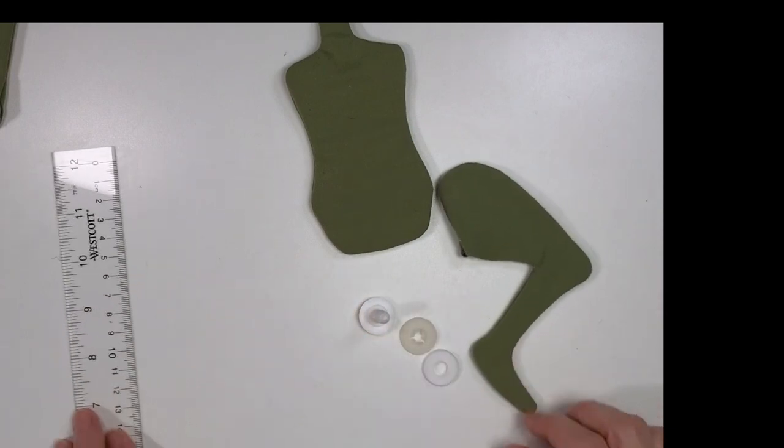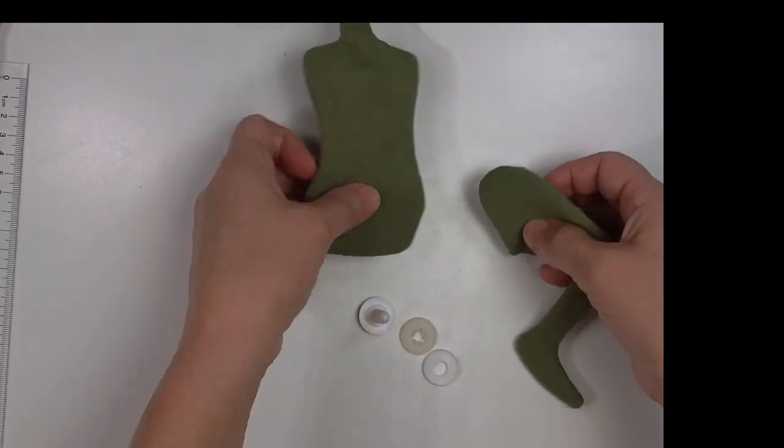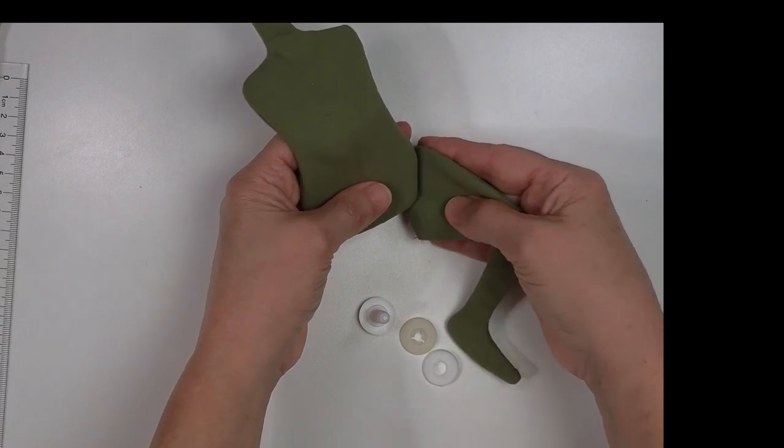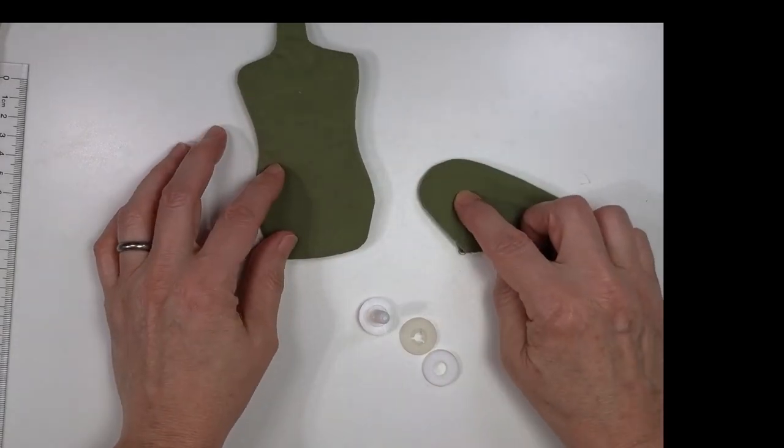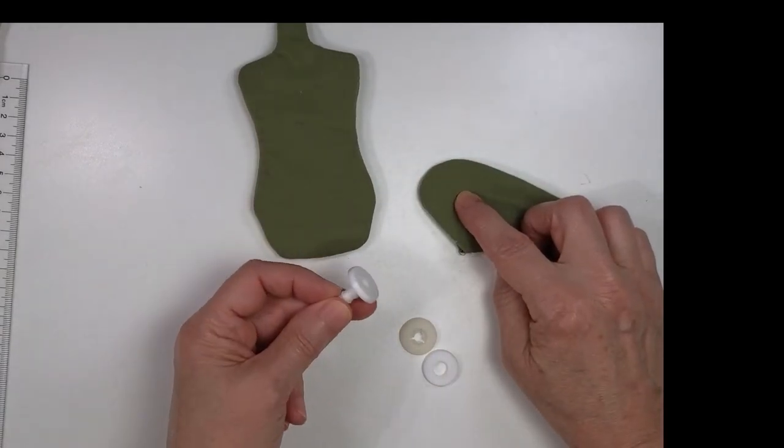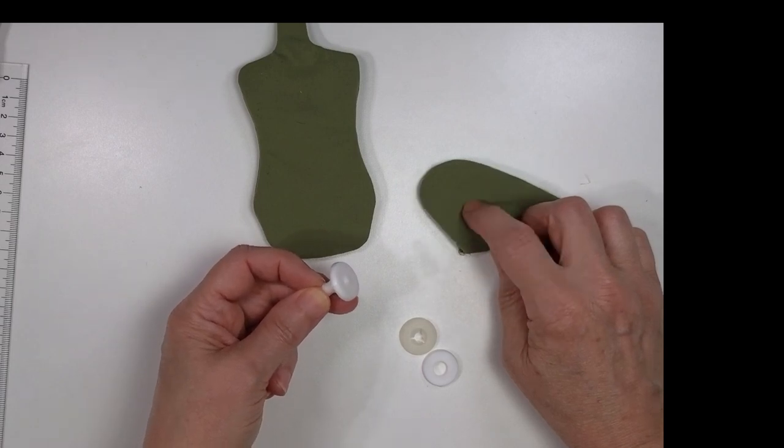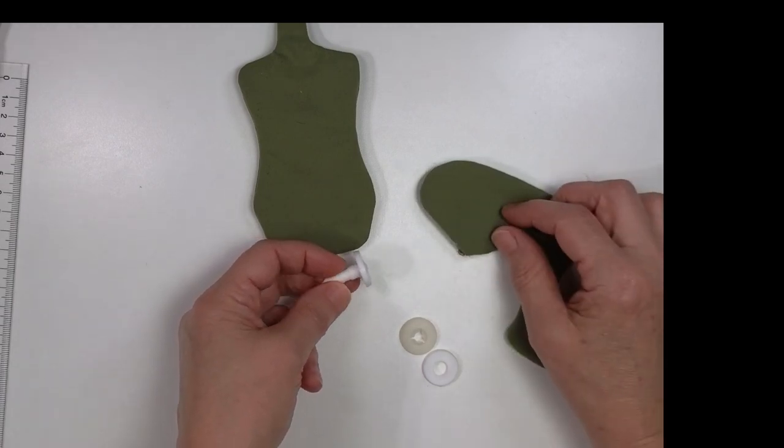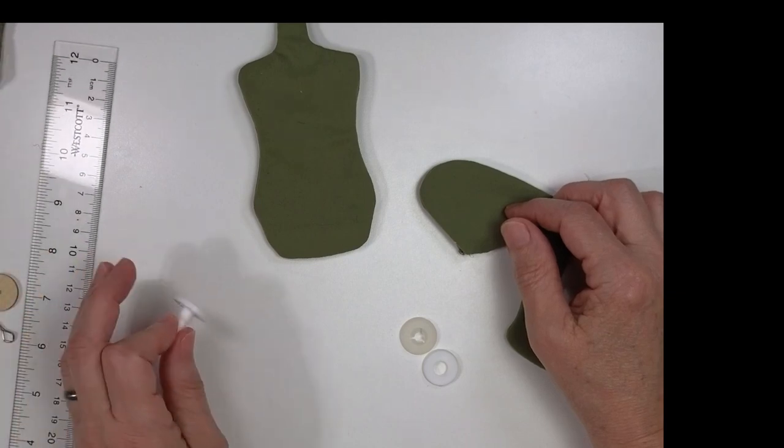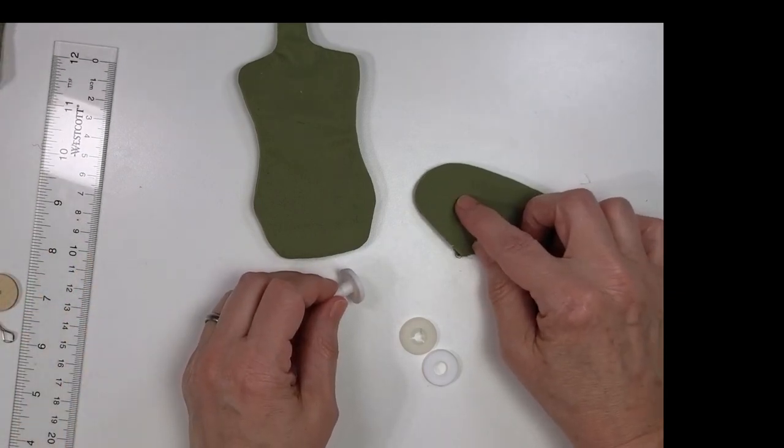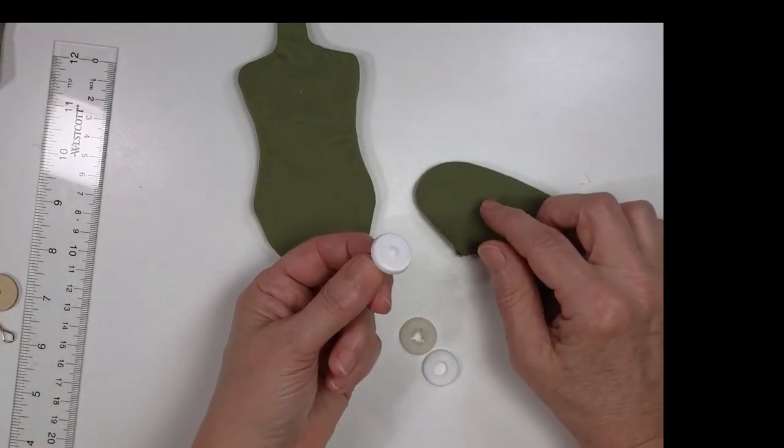The way that you find out where you want your joint is you kind of have to figure it out. Sometimes your pattern will have a marking. If it tells you what size joint to use, then you can use their marking. But a lot of times, like when I do patterns, I don't know what kind of joint you're going to choose, so I don't put a mark on the pattern piece because it depends on the size of your joint.